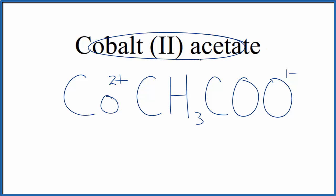So since cobalt acetate is a neutral compound, it doesn't say ion after it, these charges here, they need to add up to zero, give us a net charge of zero.